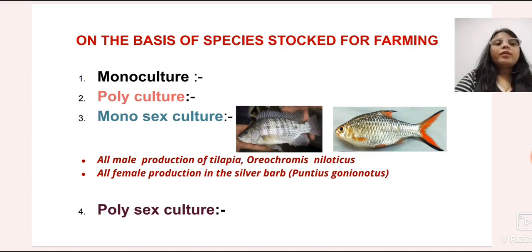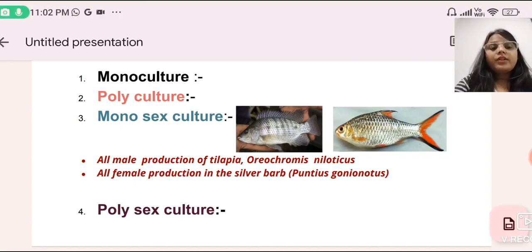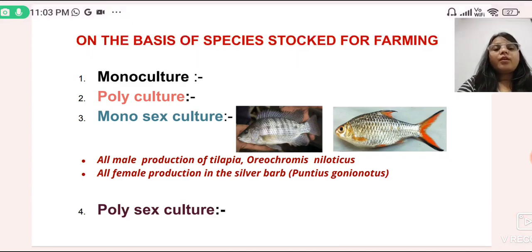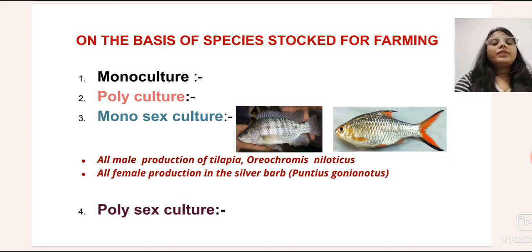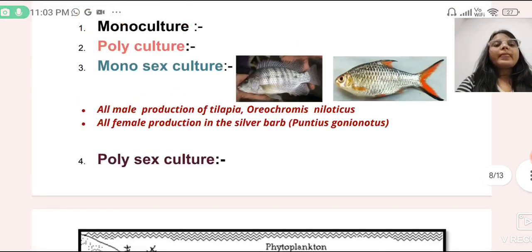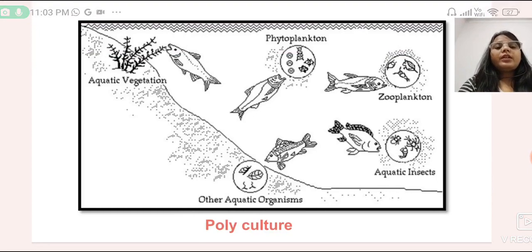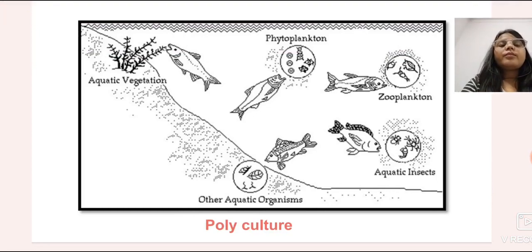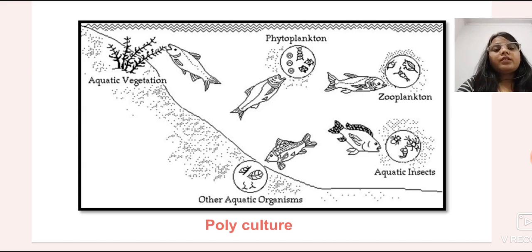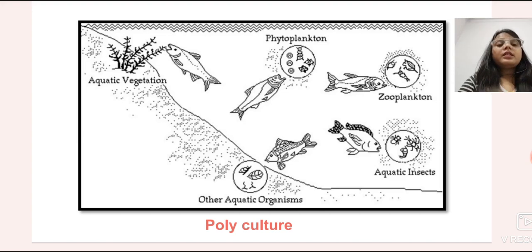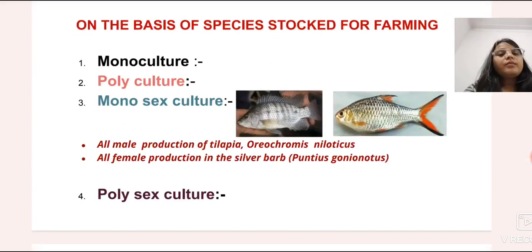Polyculture — poly means many, culture means farming. If two or more different fish species are farmed in one pond, that is called polyculture. In a polyculture system, we use fishes according to their feeding habit or habitat. For example, in this image we can see some fishes feed on phytoplankton, some on zooplankton, some on aquatic insects, and some on aquatic vegetation, so they use all food material available in the pond and survive together without any competition.